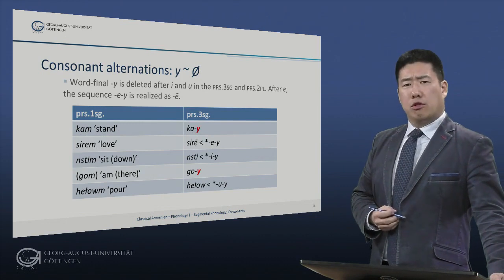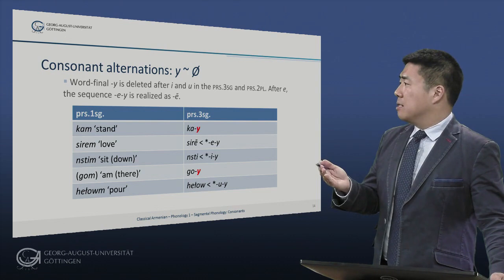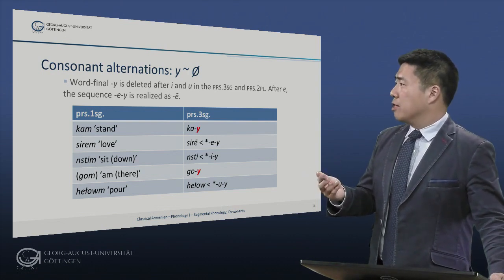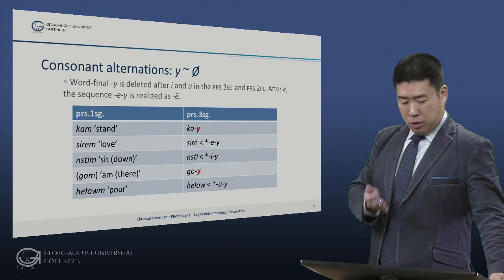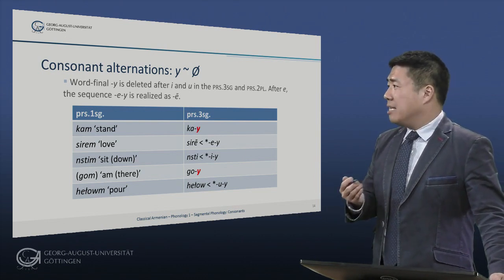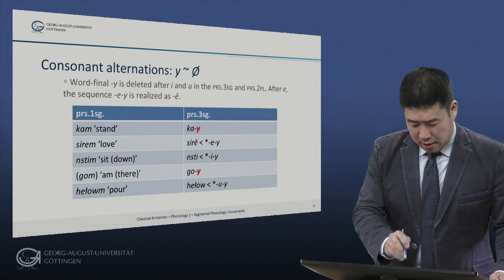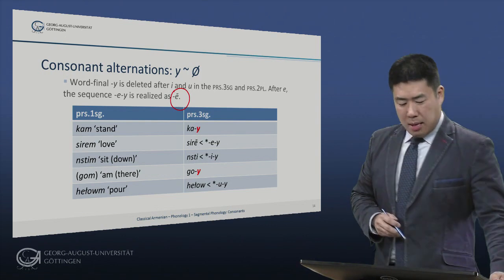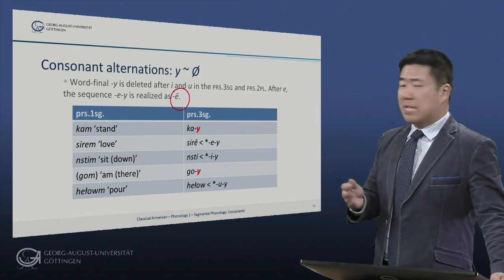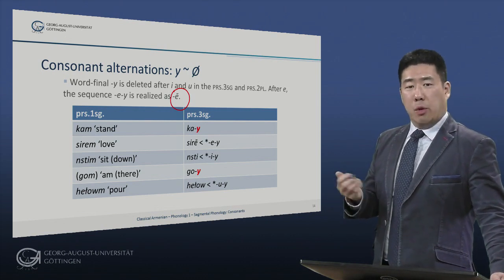Finally, we have an alternation between Y and zero. The word-final Y is deleted after I and U in the present third singular and the present second plural. These examples are present third singular. After E, the sequence ay is realized as a high-mid vowel.